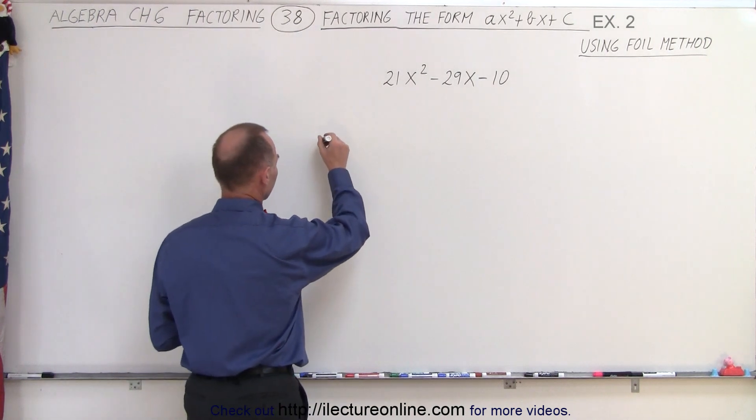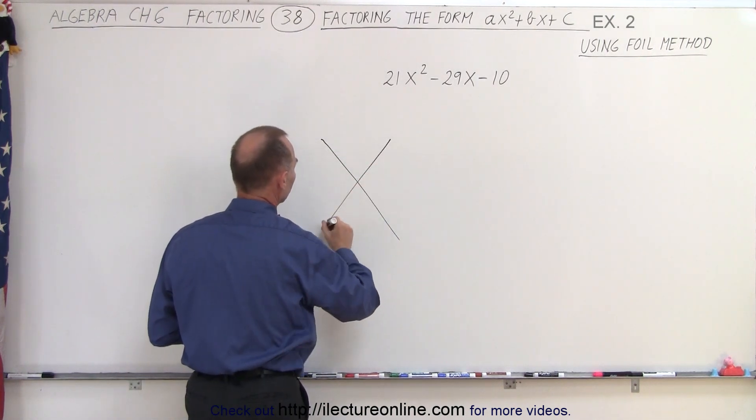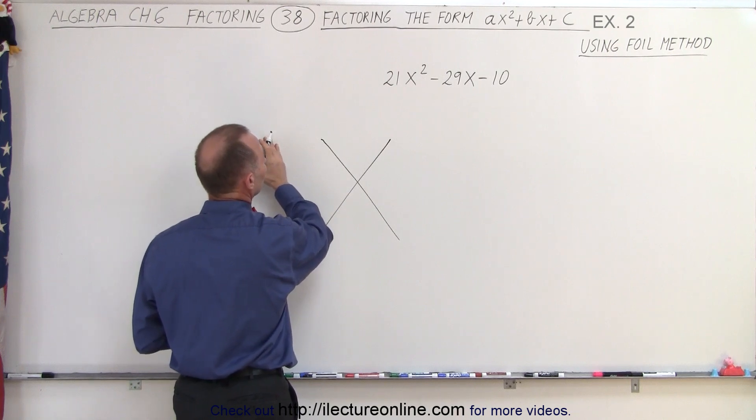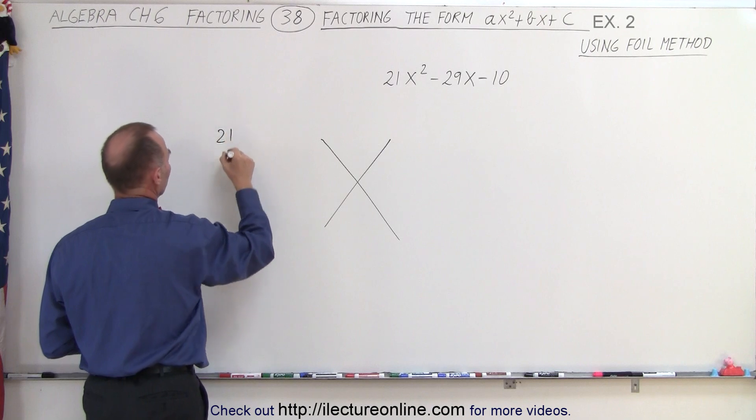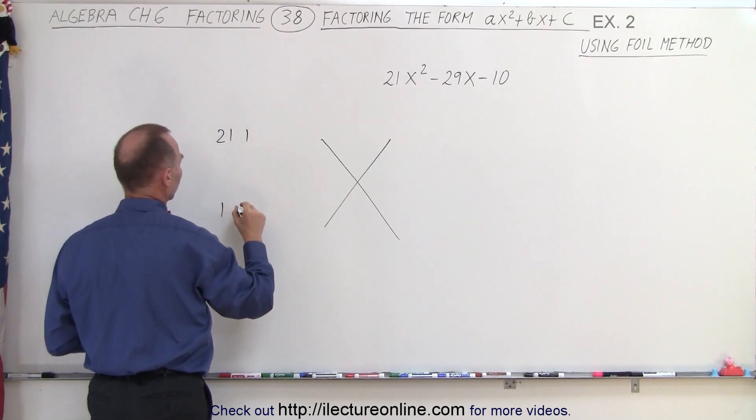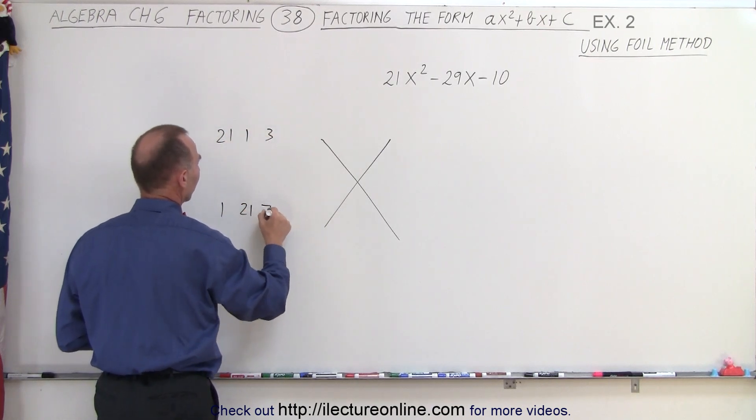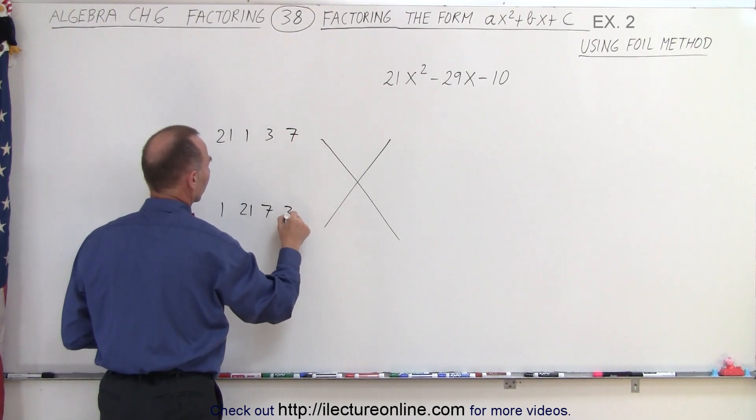Again, we draw a big foil, two lines across one another. On the left side, we put in all the combinations that multiply to get 21. For example, 21 and 1, or 1 and 21, or we could have 3 and 7, or 7 and 3.